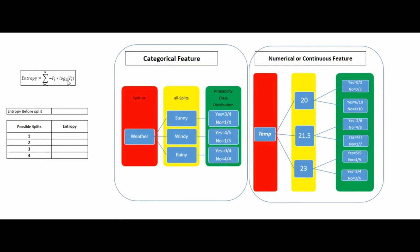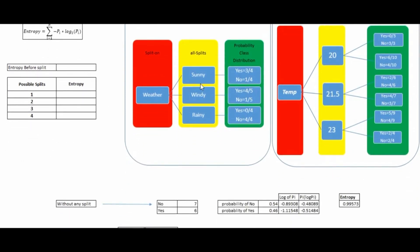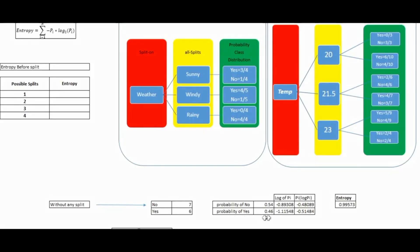The formula for entropy is: minus of pi multiplied by log of pi, summed over all nodes. For the initial dataset with no splits, we have 7 no's and 6 yes out of 13 points. The probability of no is 7/13 = 0.54, and the probability of yes is 6/13 = 0.46. After finding the log of each probability, multiplying, and summing, we get an initial entropy of 0.99573.